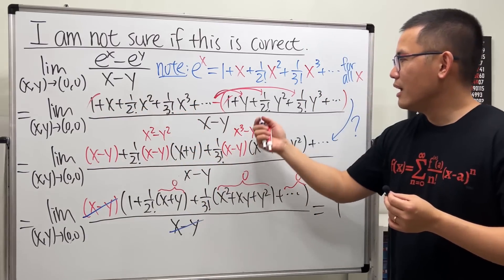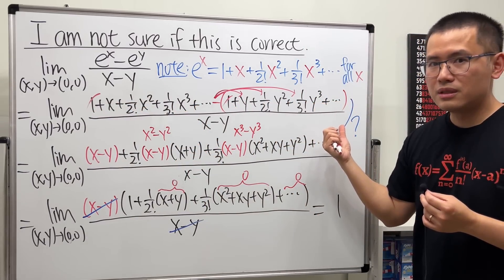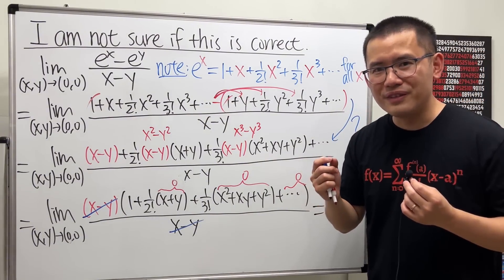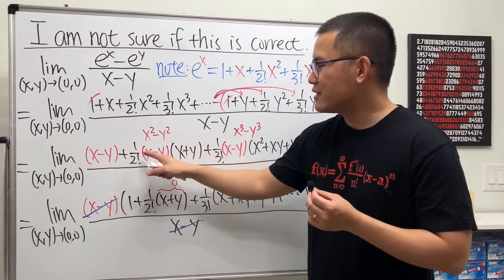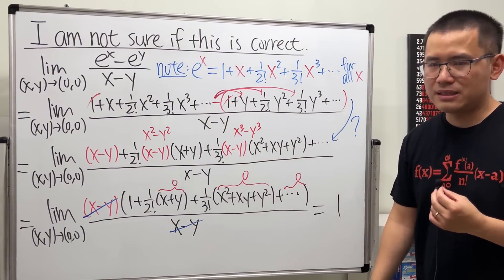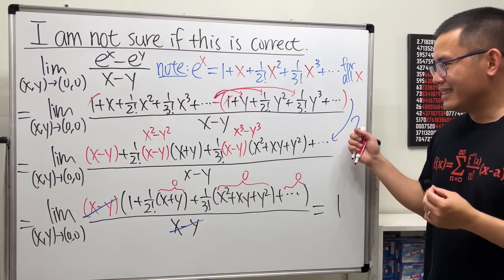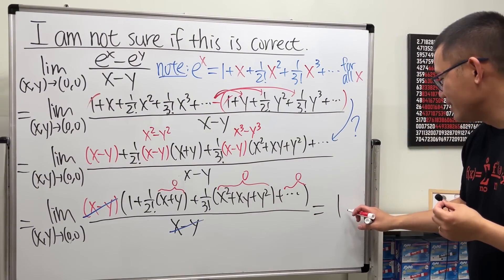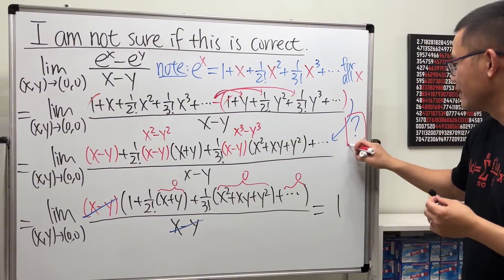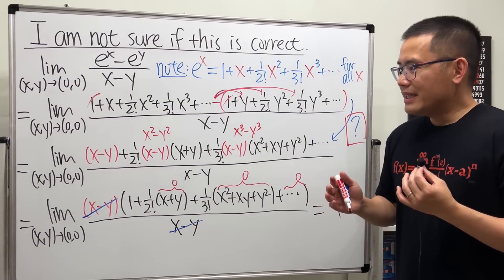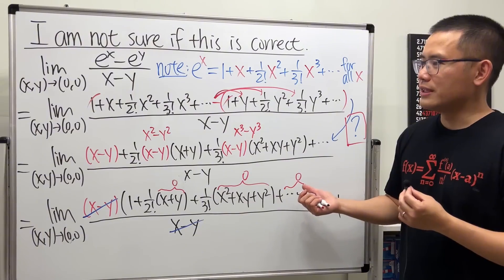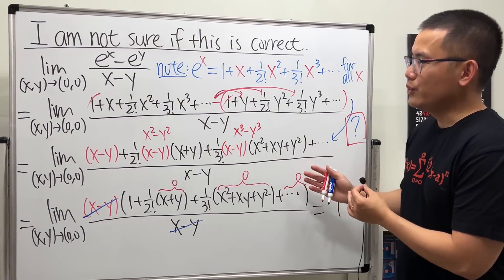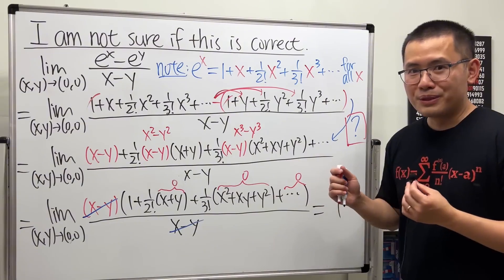Notice we wrote down only four terms and then dot dot dot — we have infinitely many terms. Likewise, the other series also has infinitely many terms. They both have infinitely many terms, but do they really have the same amount of infinitely many terms that allows us to factor out (x minus y) once we pair them up? That's the main concern. I cannot box this answer because I really don't know. If you know whether this method is correct or not, please leave a comment below.